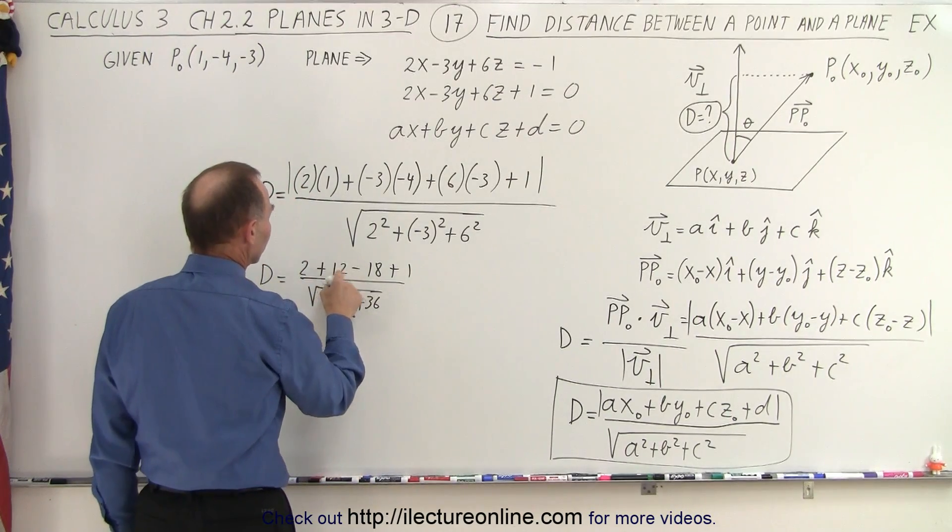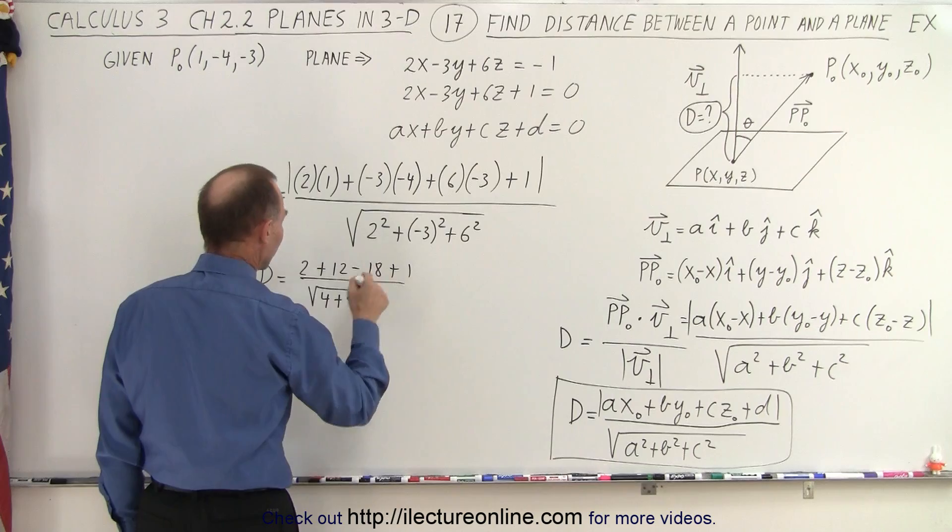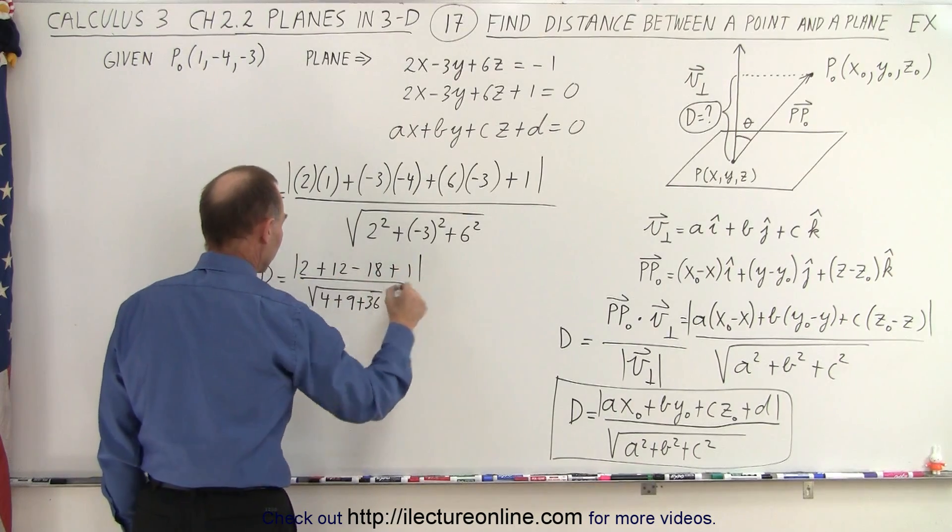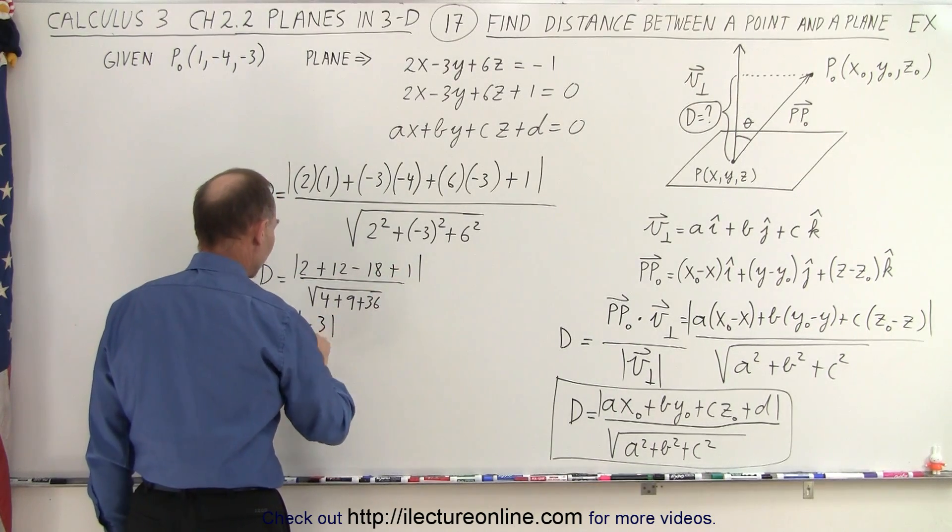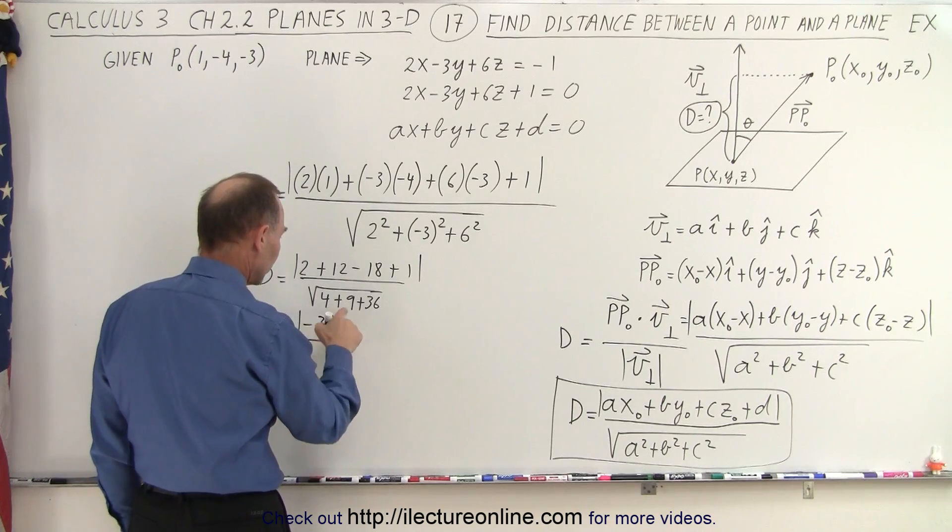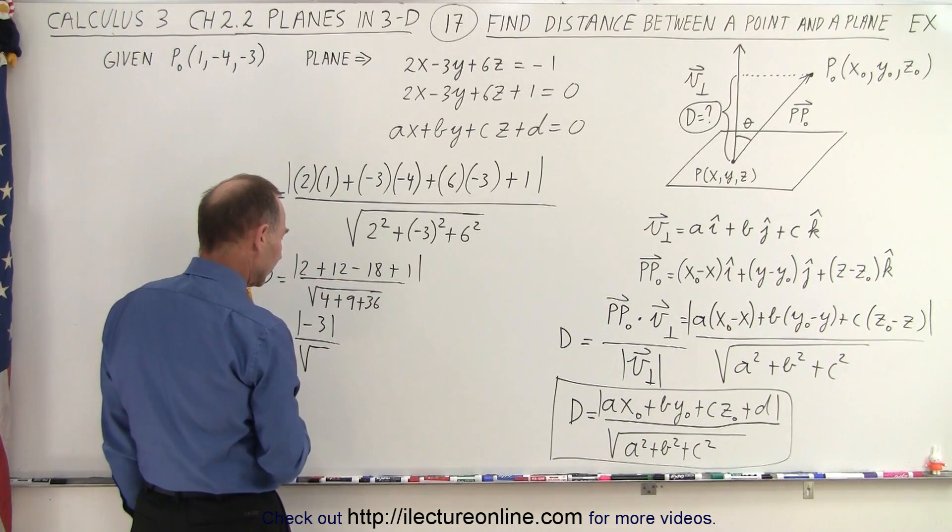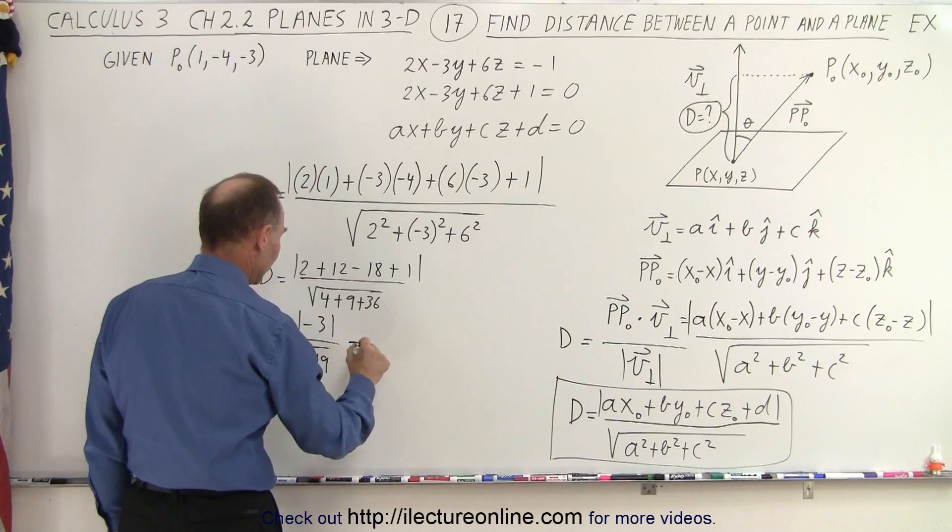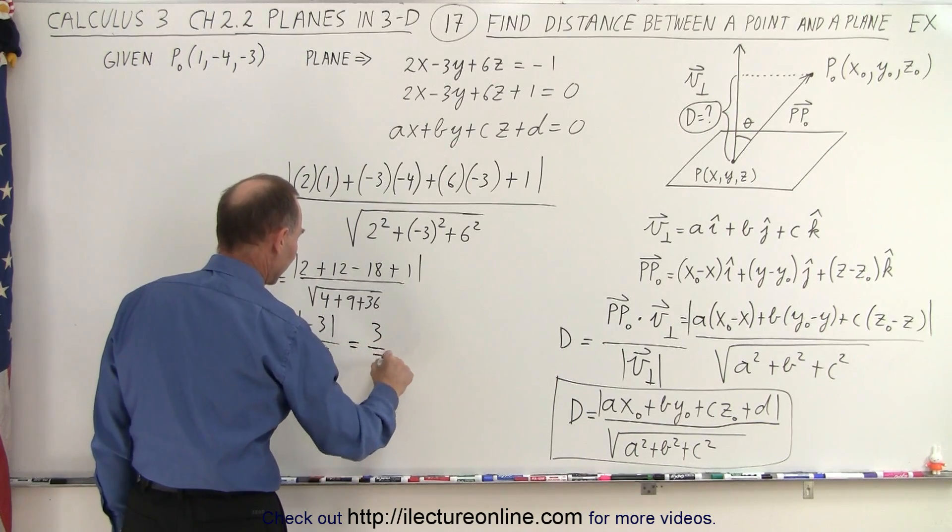So 2 plus 12 is 14, that's 15 minus 18, that's minus 3. So the absolute value of minus 3 divided by, this is going to be the square root of 49, which of course is equal to 3 divided by 7.